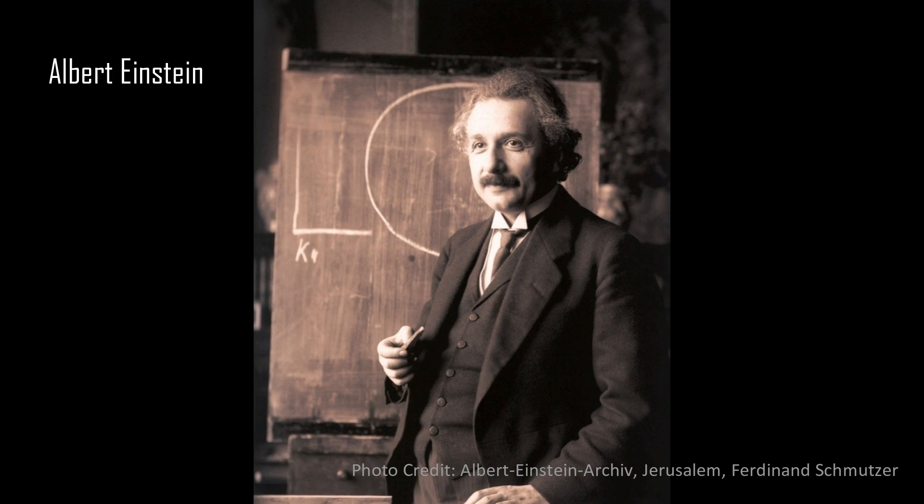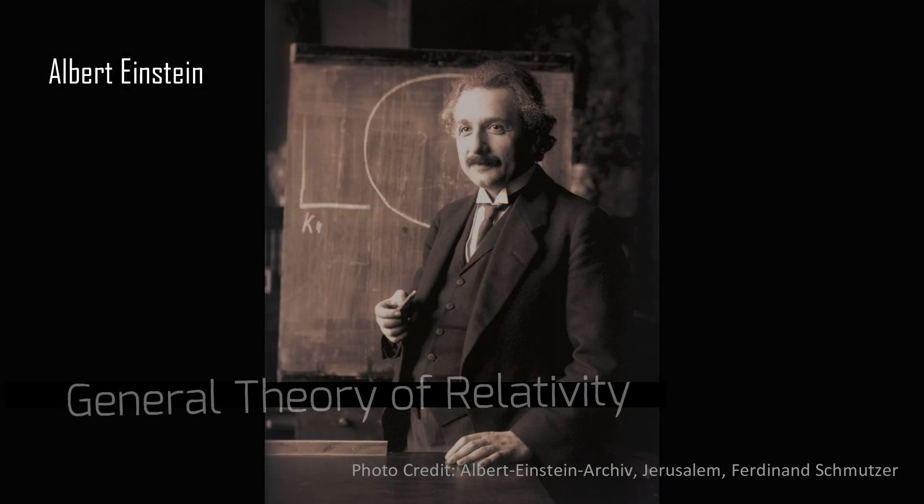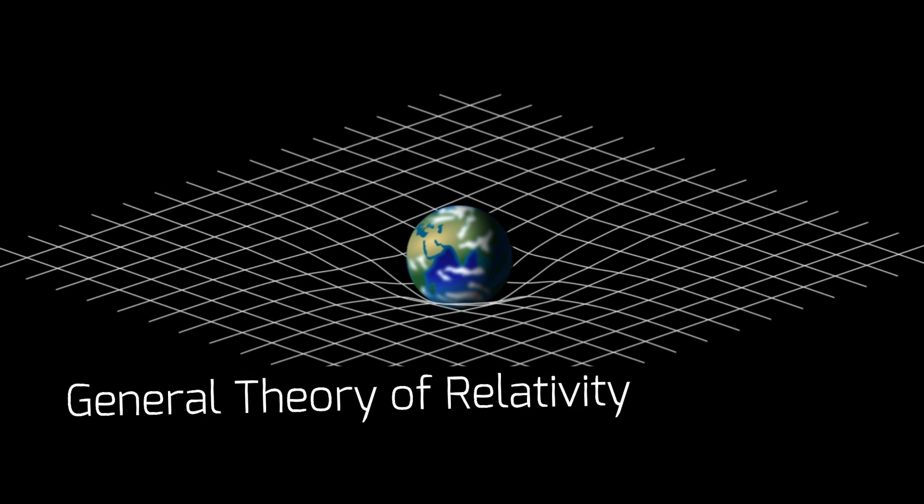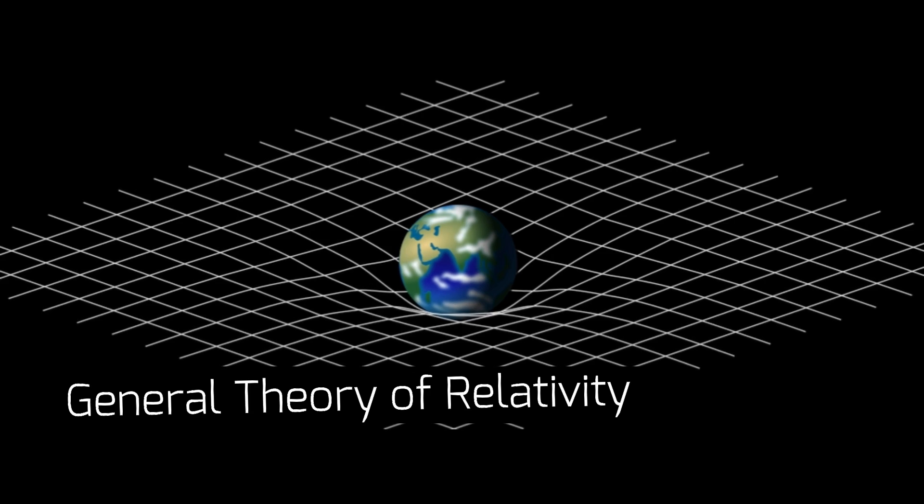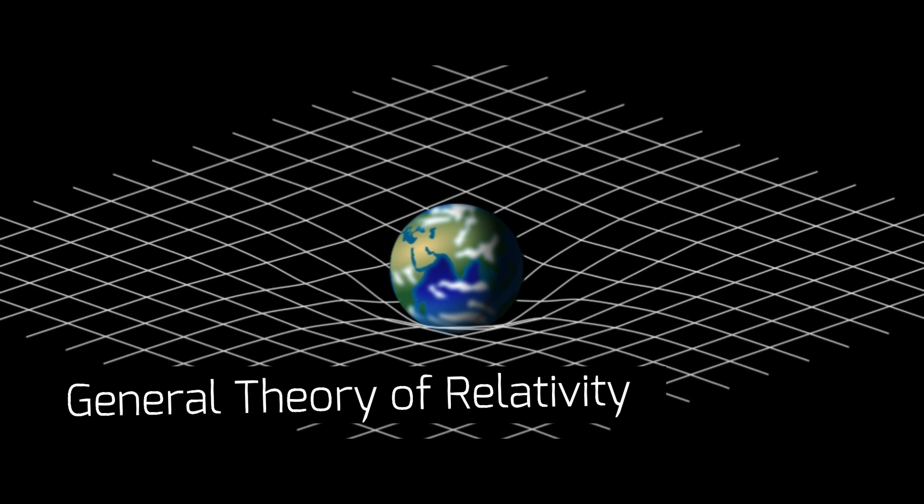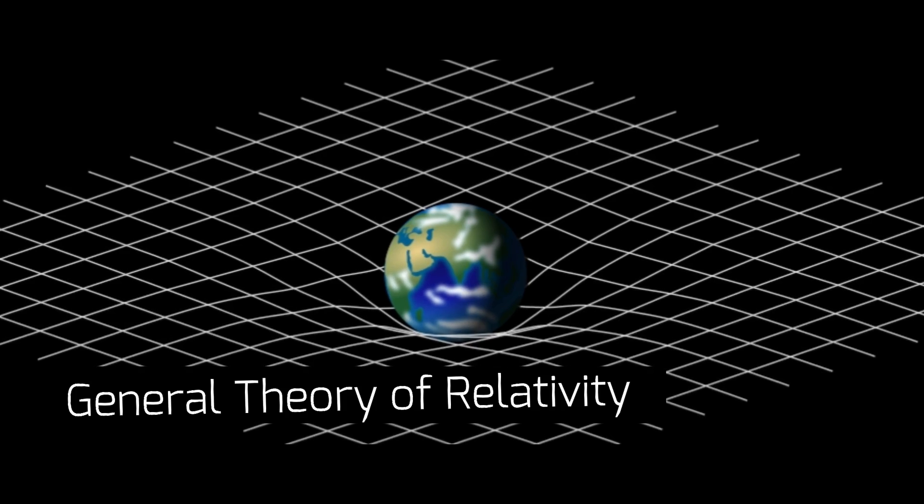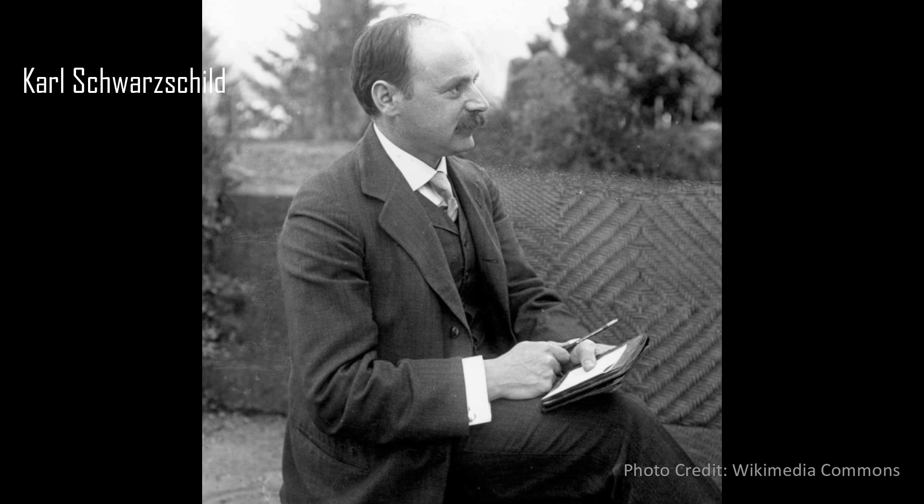Such a body was first predicted by the theory of gravitation given by Albert Einstein, which is known as the general theory of relativity. This is the modern theory of gravitation, which is different from the Newtonian theory of gravitation, because gravity in general theory of relativity is described by curves and warps in the fabric of space-time.